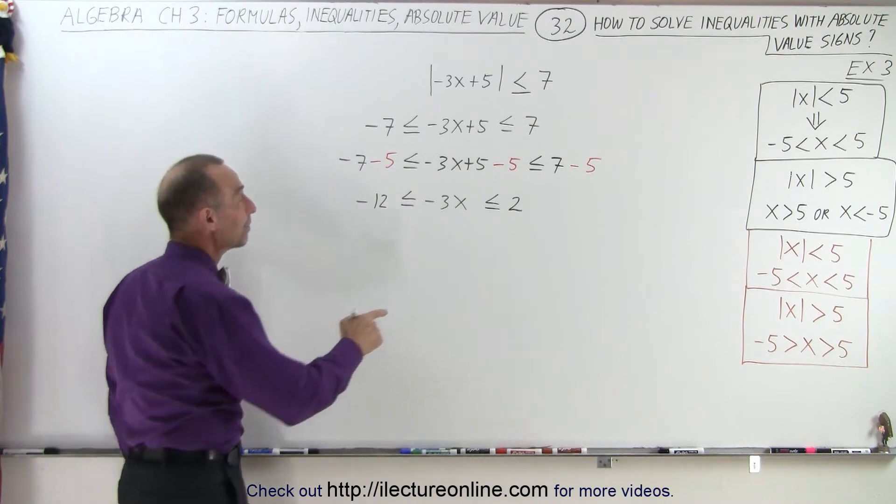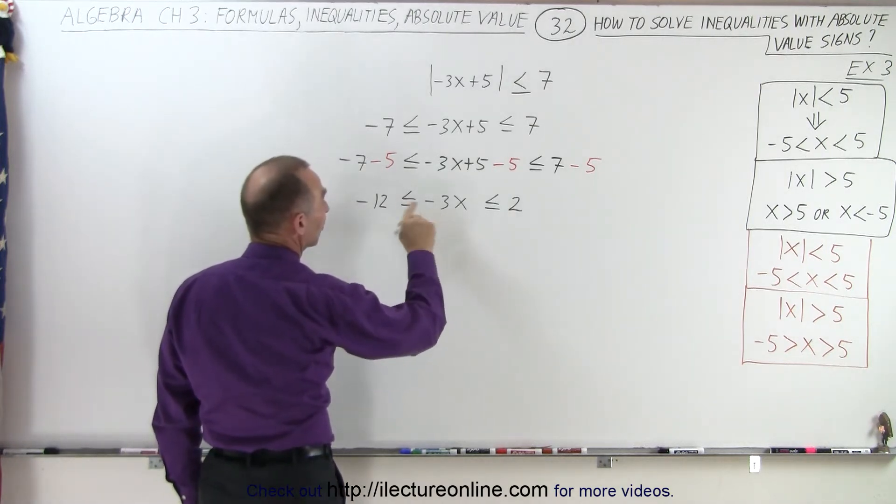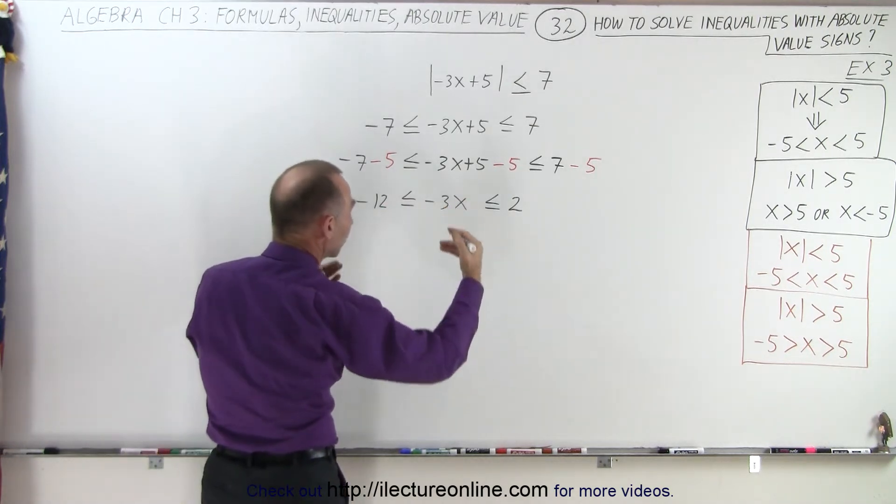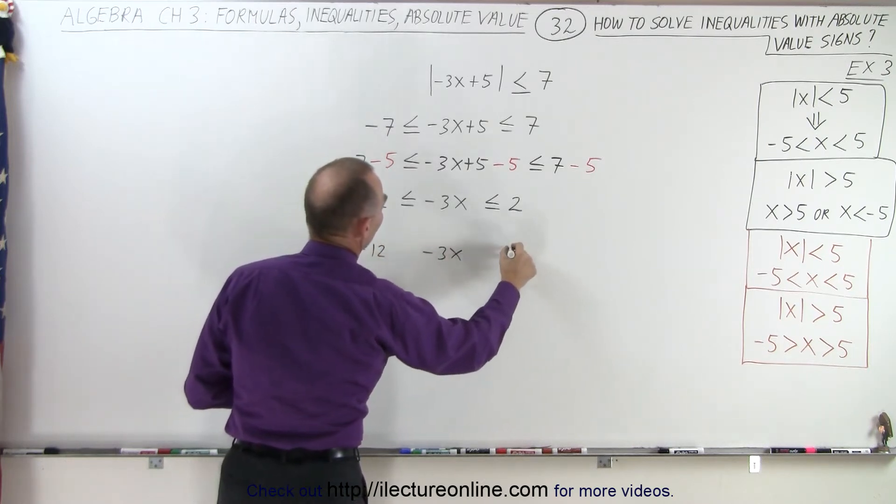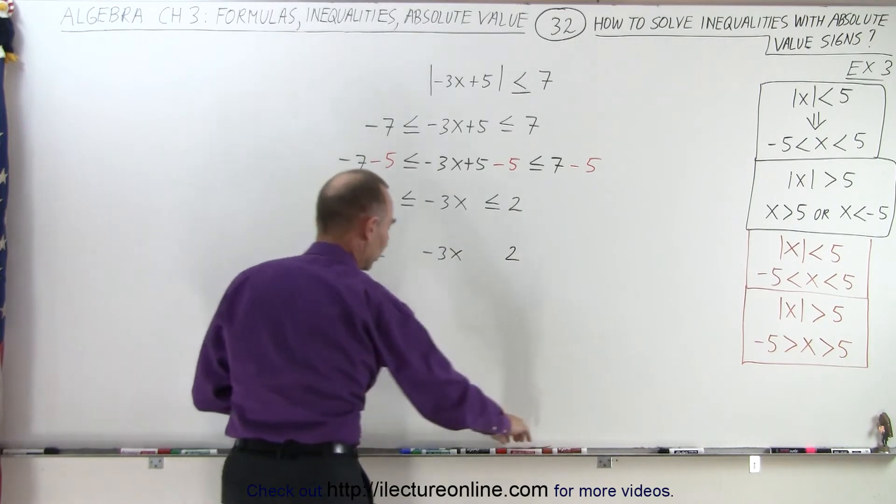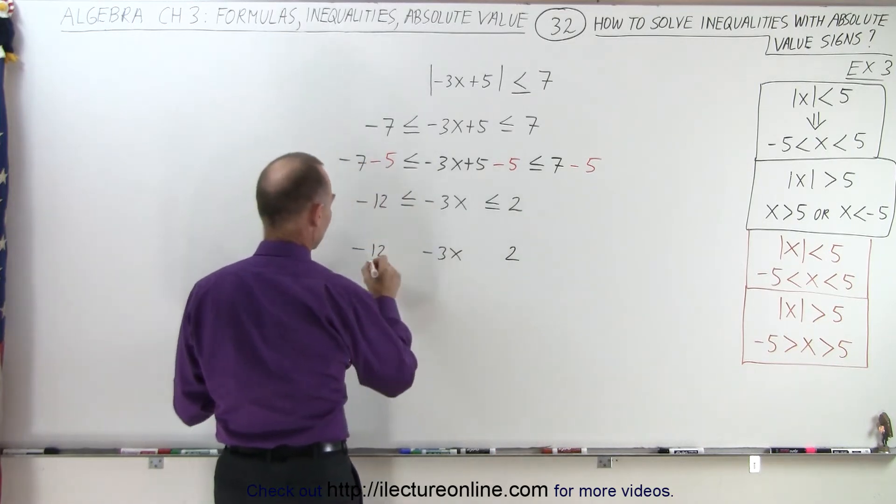Next, we need to divide by negative 3. But since I have to flip the inequality signs, I'm going to repeat that. Minus 12, minus 3x, a positive 2. We're going to divide each by negative 3.